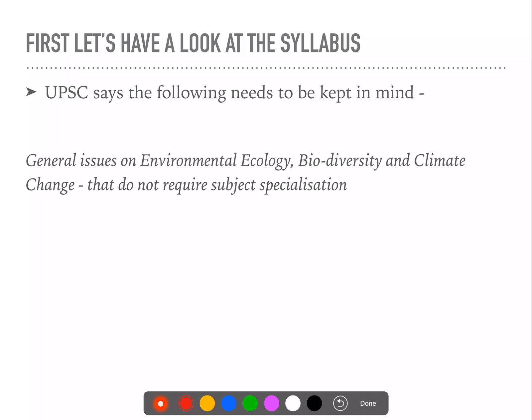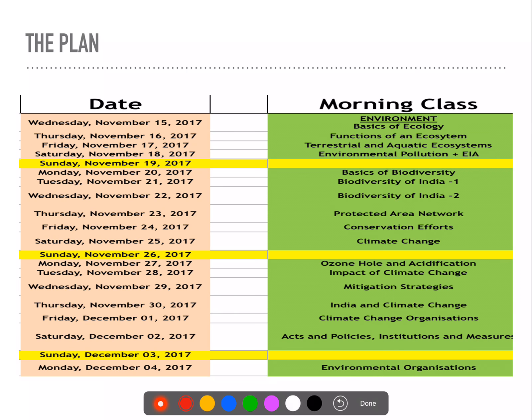The syllabus that UPSC has prescribed for prelims — what is it? General issues on environmental ecology, biodiversity, and climate change that do not require subject specialization. So we have our plan: first we have environmental ecology, then biodiversity, and then the aspect of climate change.